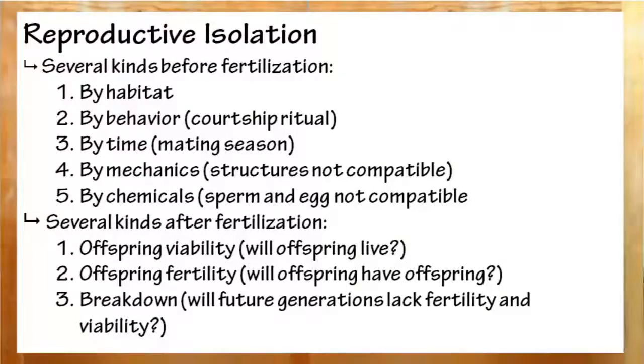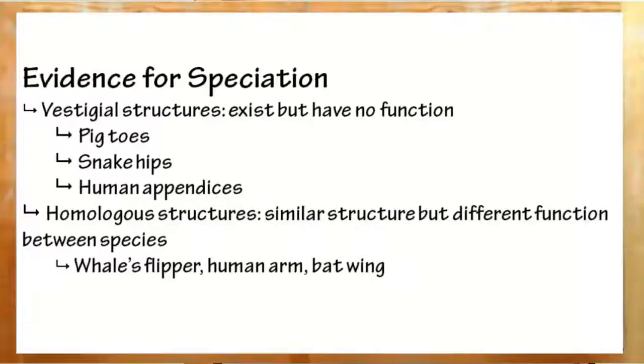Now, the last step is reproductive isolation. This is when species cannot reproduce. There are five things that prevent species from reproducing before the egg is fertilized. Living in different habitats. Having different courtship behaviors. Mating at different times. Mechanical isolation. The reproductive gamete organs do not fit. And finally, by gamete, if the sperm cannot enter the egg because of the wrong chemicals. If the offspring is produced, it may not live. It may not be able to have children. Or over several generations, it may break down. Evidence for this include vestigial structures. Structures that no longer serve any function. And homologous structures. Equivalent structures between different species that perform different functions usually.